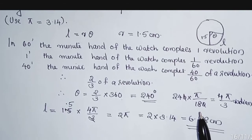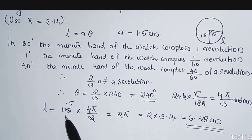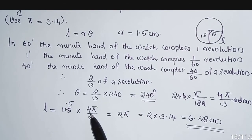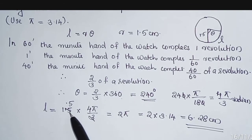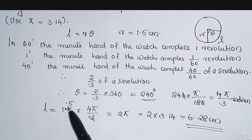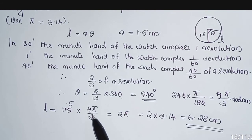l = 1.5 × 4π/3. Dividing 1.5 by 3, we get 0.5. 0.5 × 4π = 2π.